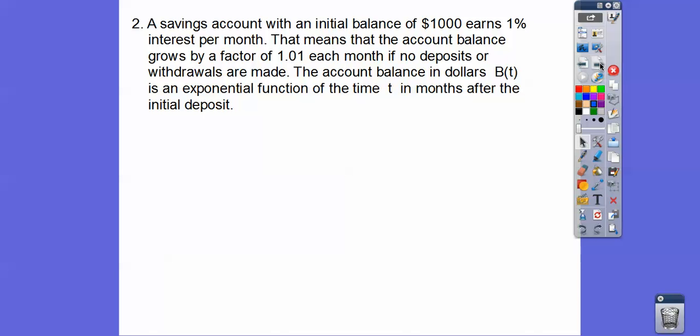A savings account with an initial balance of $1,000, there's A sub 1 or our first term, earns 1% interest per month. That means the account balance grows by a factor of 1.01 in each month if no deposits or withdrawals are made. Now, this 1.01, it means it's 100% plus the 0.01, because this is 0.01. Remember, you move the decimal two places to the left. So here's the 0.01, the 1%, so it takes the 100% of your balance plus the 1%, so it's 101%. That's what this is right here.